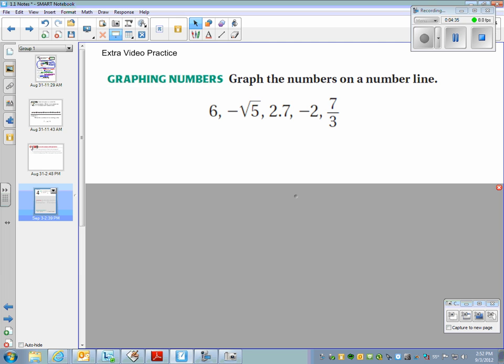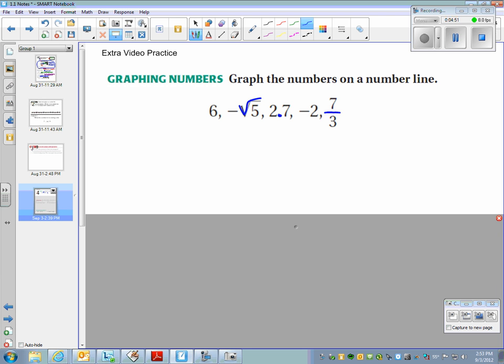First of all, graphing numbers. Graph the numbers on a number line. So what we want to do when we see a problem like this, we want to write them all so they look the same. Because right now, we've got a square root, we've got a decimal, and we have a fraction. And we have negative numbers. We've got all sorts of different things. So what we want to do first is just get them all to look sort of the same, and then we can kind of figure out from there.